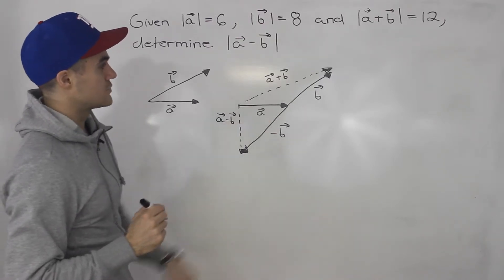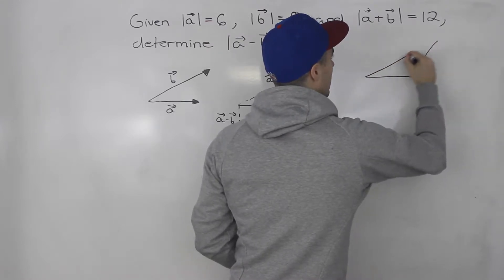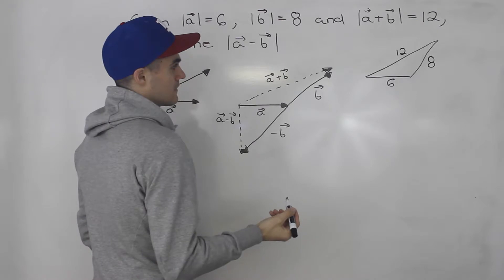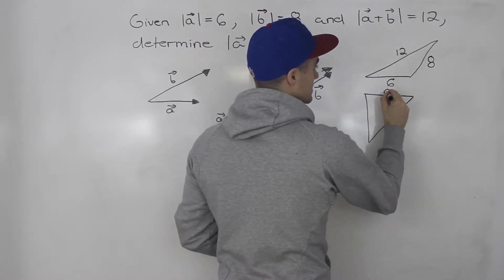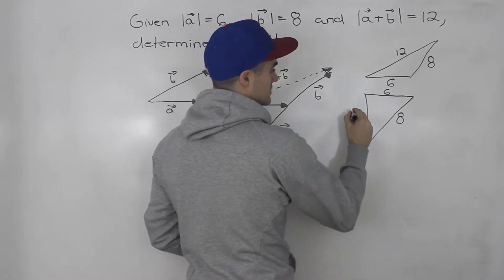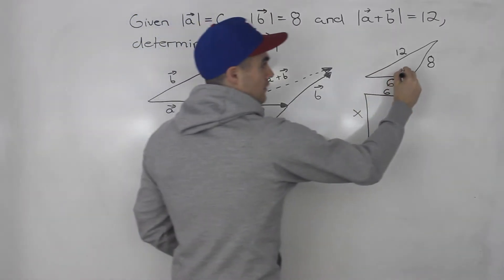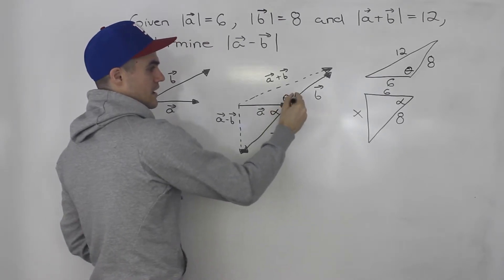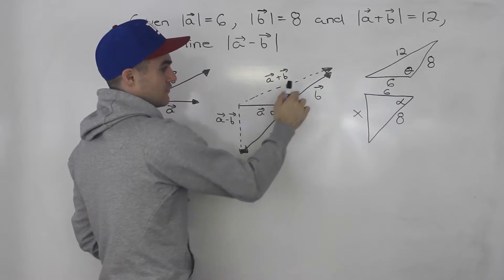So how can we do that? Notice that we have two triangles here. Let's draw them out: we have vector a, vector b, and vector a plus b, with side lengths 6, 8, and 12. And then for the second triangle with a minus b, this is still 6, this is still 8, and this is what we are finding — let's label it x. The way these two triangles relate is that angle theta and angle alpha have to equal 180 degrees, because they are supplementary — on a line together.